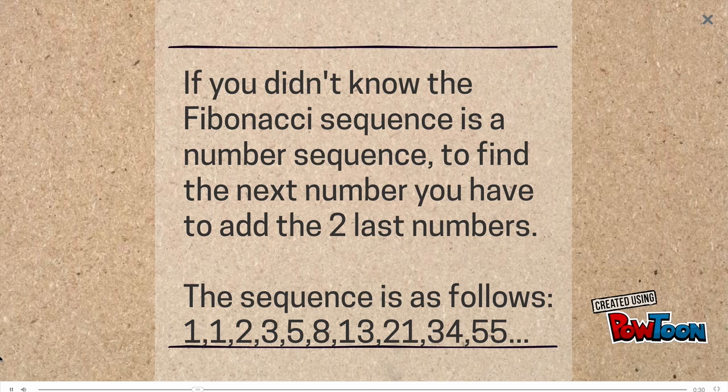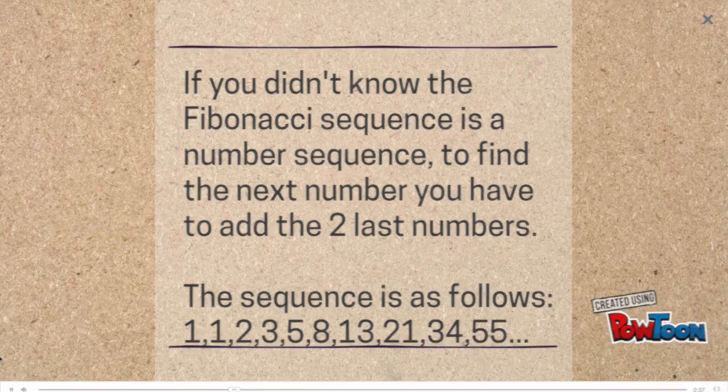If you didn't know, the Fibonacci sequence is a number sequence. To find the next number, you have to add the last two numbers. The sequence is as follows: 1, 1, 2, 3, 5, and so on.